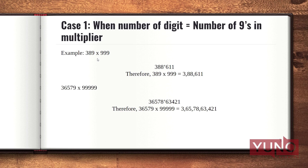The first step is to subtract 1 from the given multiplicand. After subtracting 1 from 389, it becomes 388. I have put a mark after it just to indicate that this is the number I get after subtracting 1 from the multiplicand. Now write the 9s complement starting from the leftmost digit of the multiplicand to get your answer. After writing 388, I am going to write the 9s complement of this number starting from the leftmost digit. 9s complement of 3 is 6, 9s complement of 8 is 1, and again 9s complement of 8 is 1.